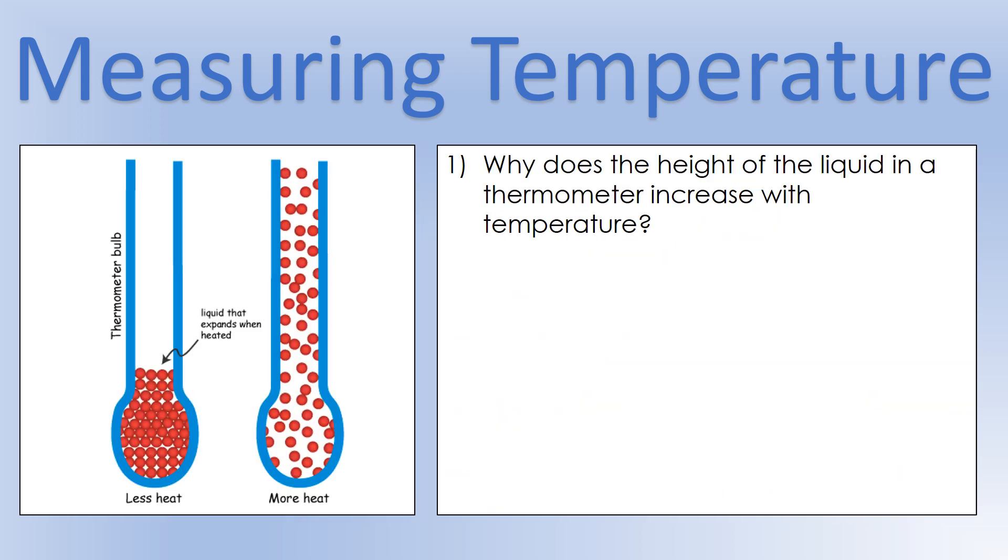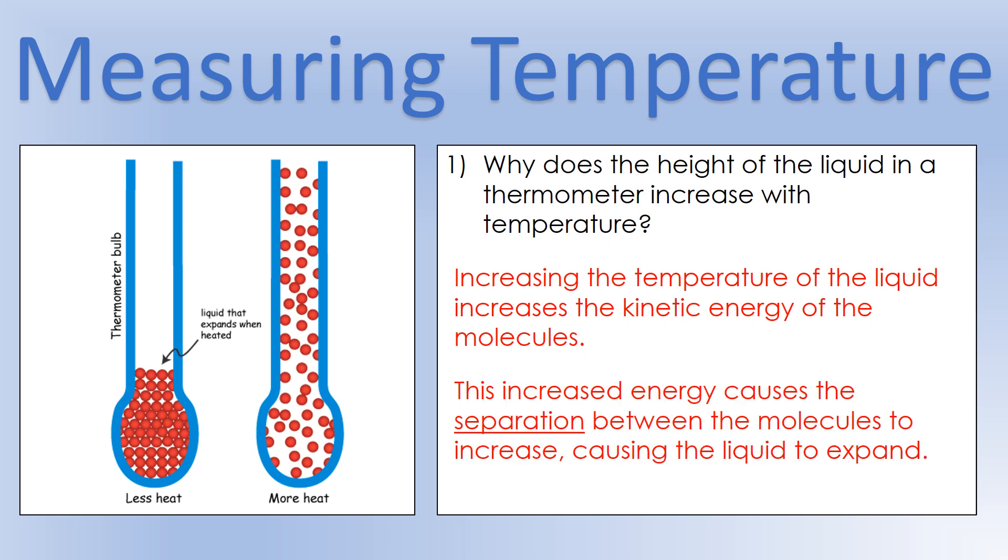First of all, why does the height of a liquid increase with temperature? So we can kind of see it on the diagram on the left. The key is to recognize what's actually changing. So what's actually happening is, as we increase temperature, we're increasing the kinetic energy of the molecules in there. And as we do that, that causes the separation between the particles to increase. And that means that the liquid overall expands. So you can see the size of the molecules hasn't changed, but the spacing between them has. And that's what causes the liquid to expand. And that's why the height increases, because the liquid has expanded.